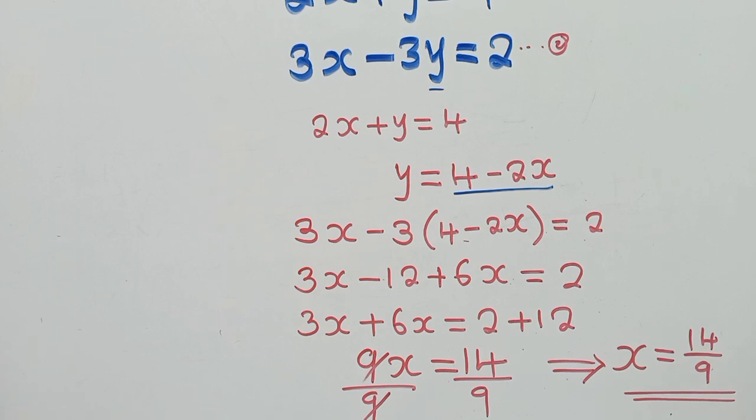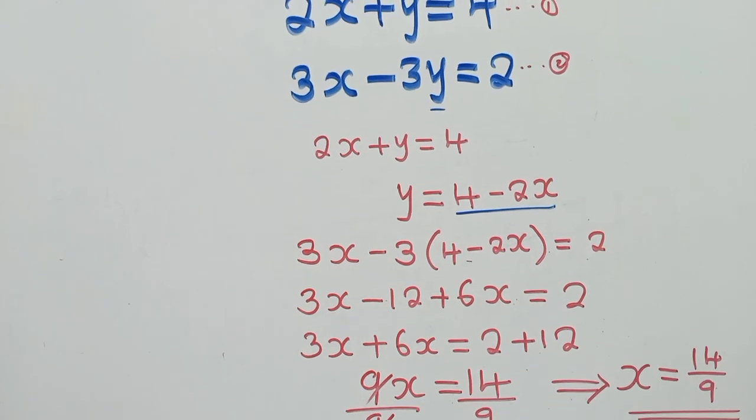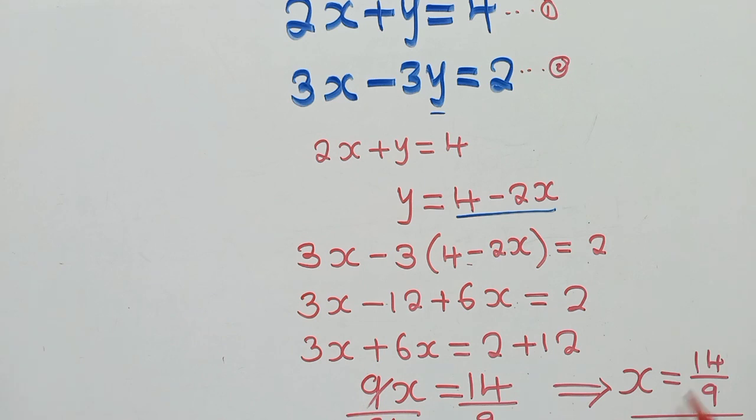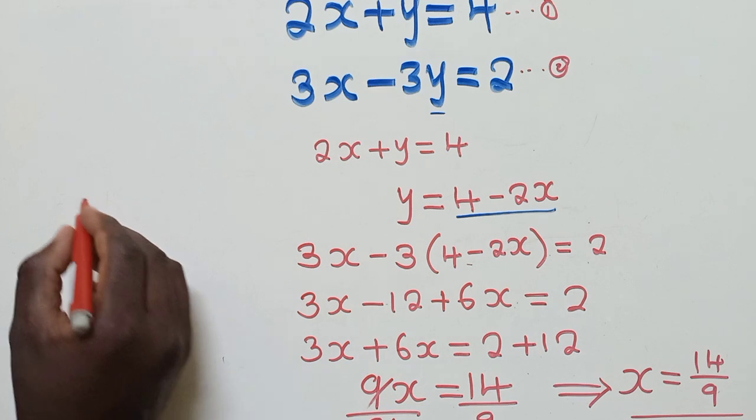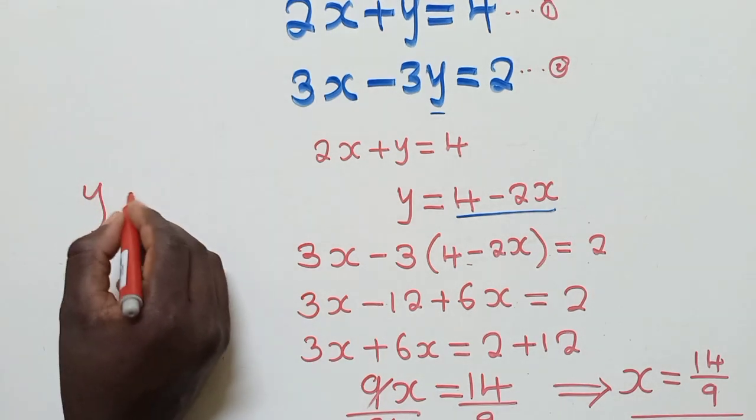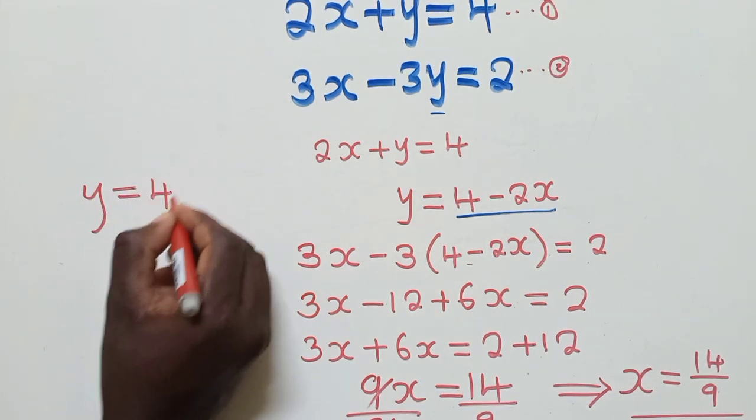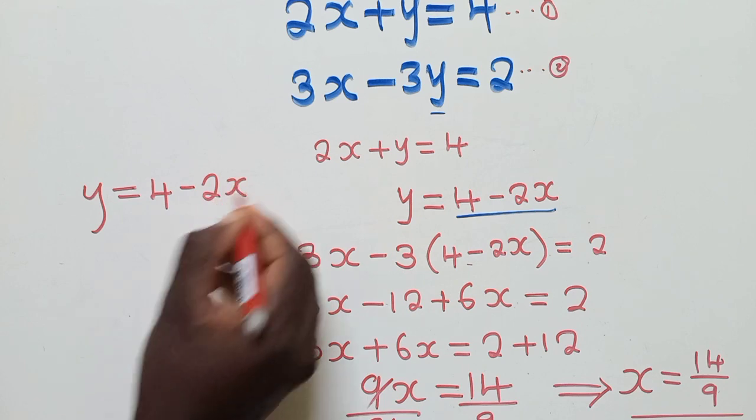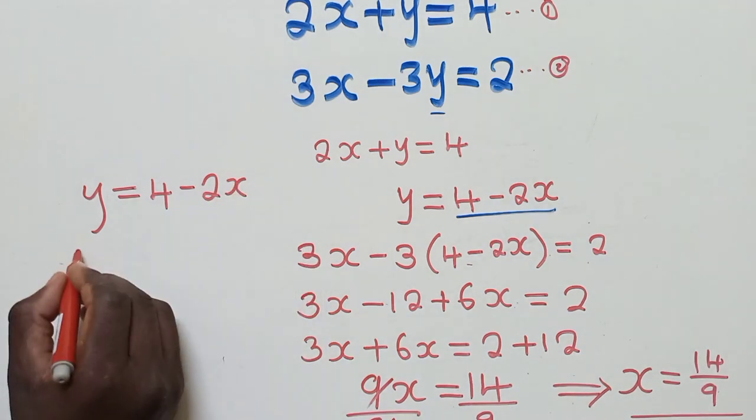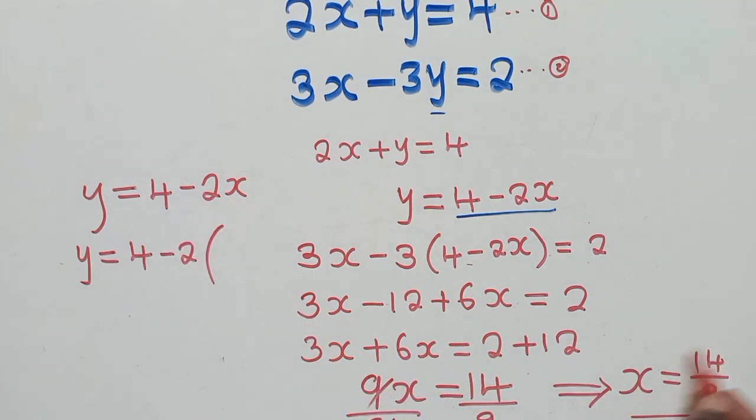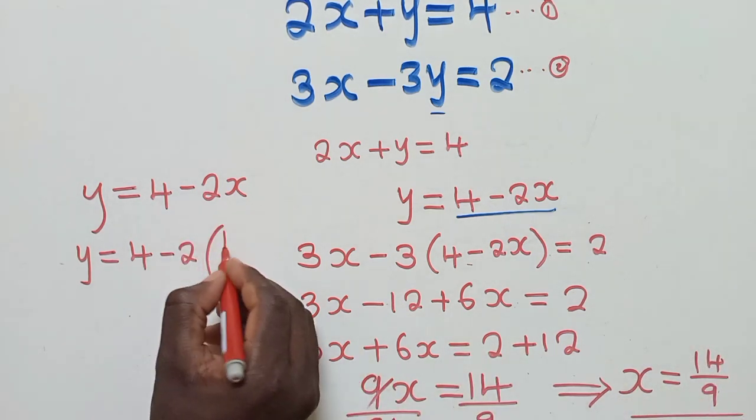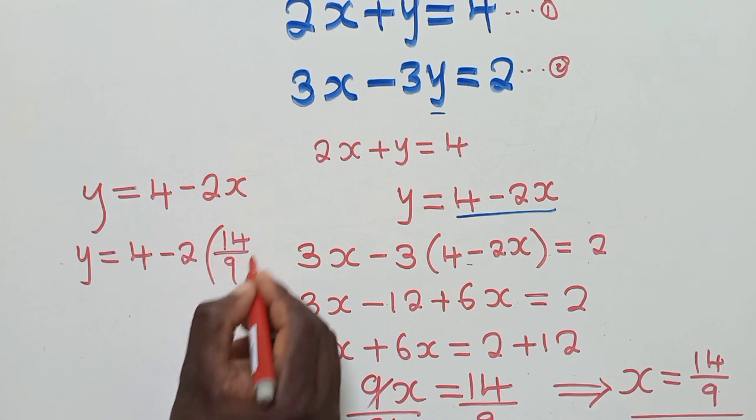So now, we can also solve for y. We've solved for x. So for y, we come at this point where we made y subject to the formula. So we shall say y is equal to 4 minus 2x. Y is equal to 4 minus 2. What is the value of x here? It's 14 over 9.